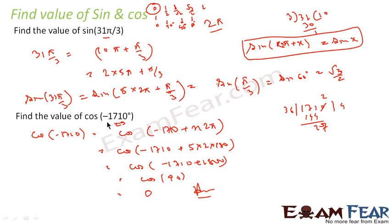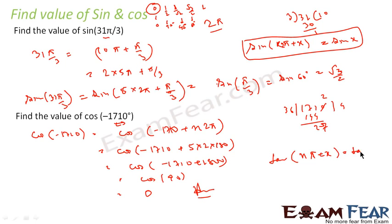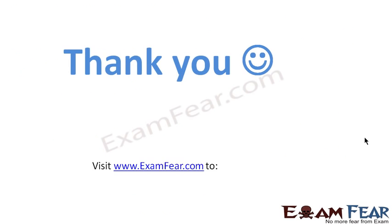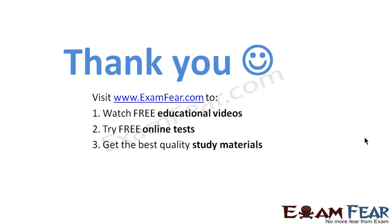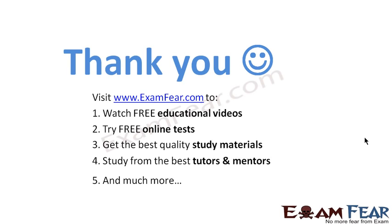To summarize: sin(k × 2π + x) equals sin(x); similarly cos(k × 2π + x) equals cos(x); and for tan, tan(nπ + x) equals tan(x). Thank you. Visit examfear.com to watch free educational videos, try free online tests, get the best quality study materials, and study from the best tutors and mentors.